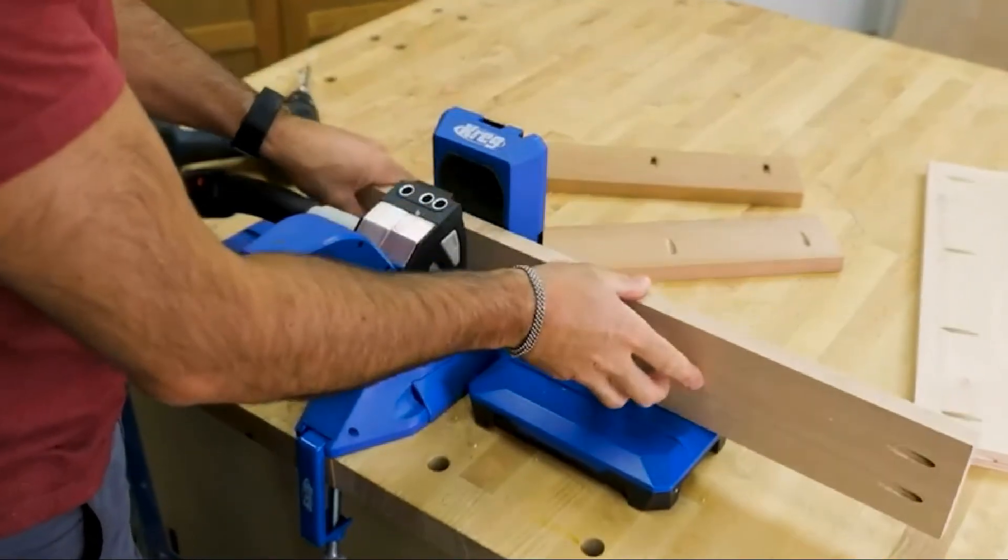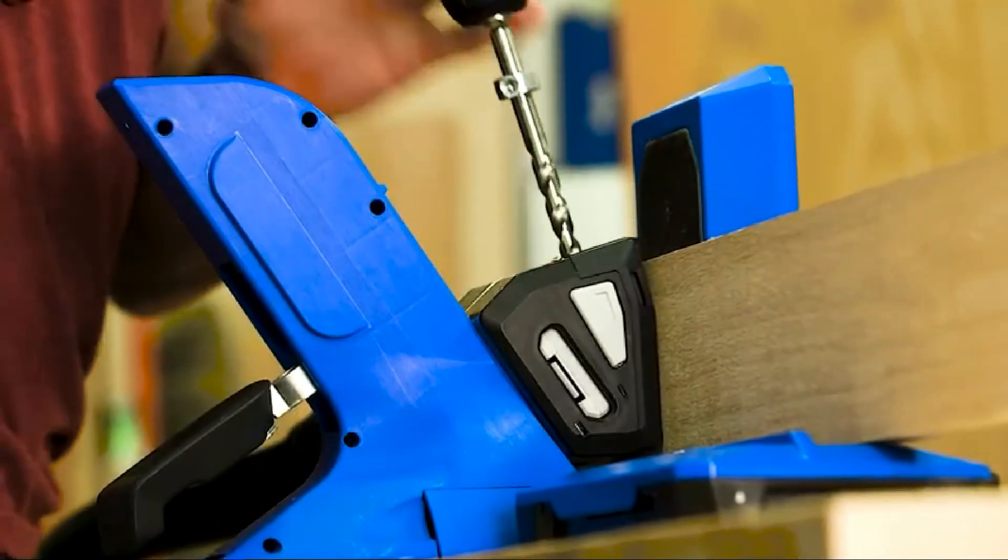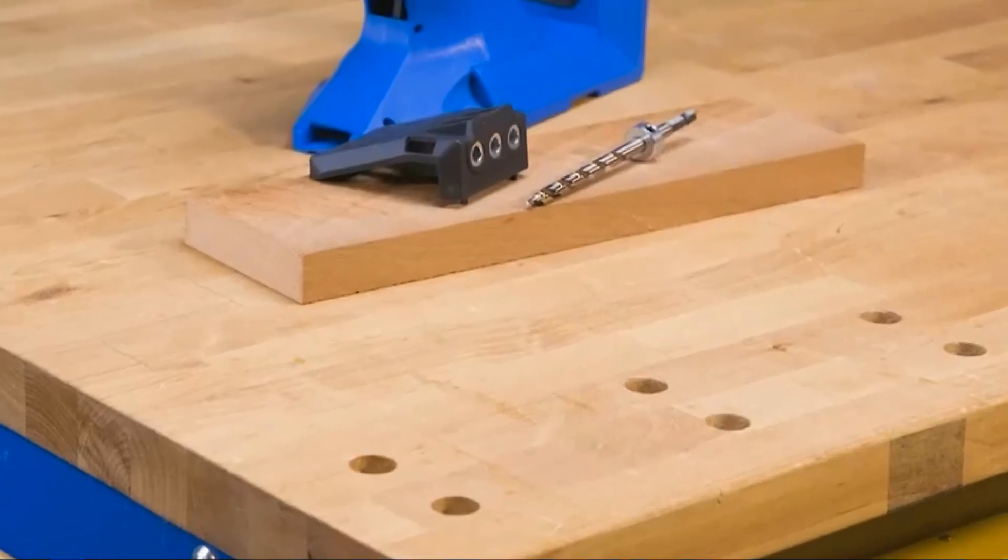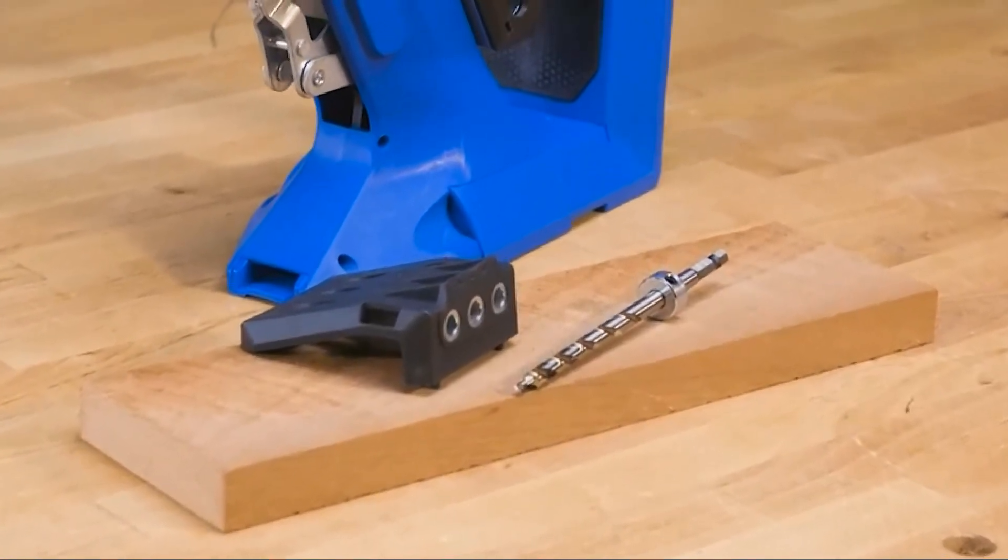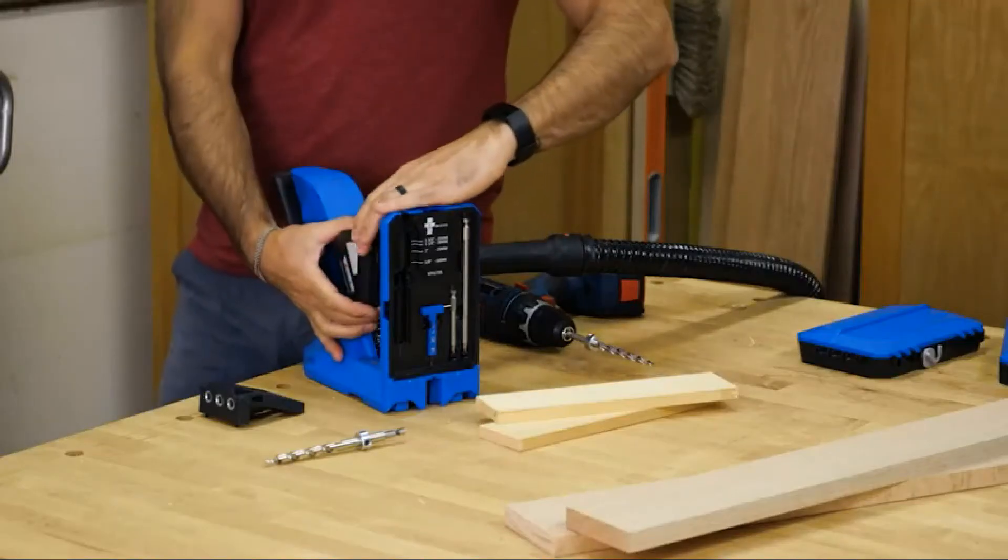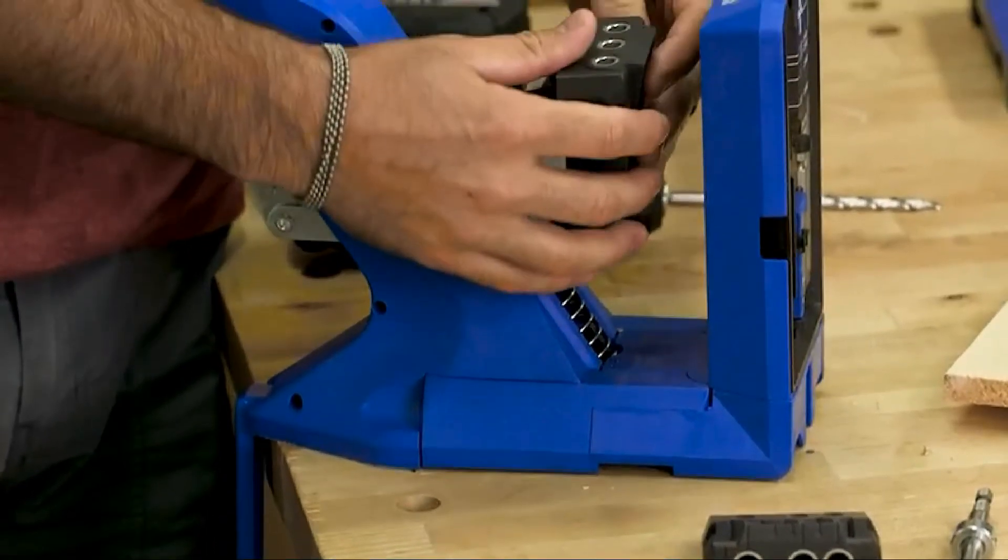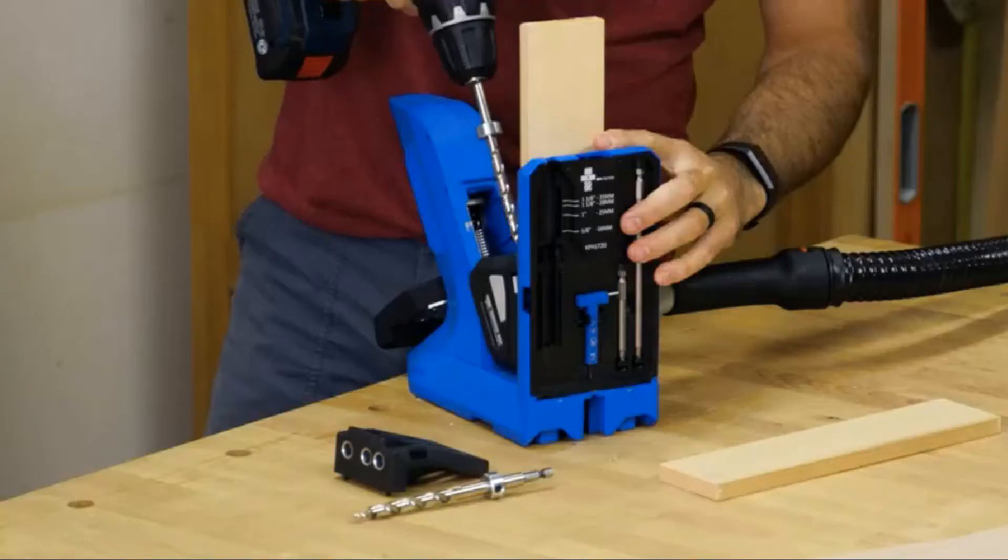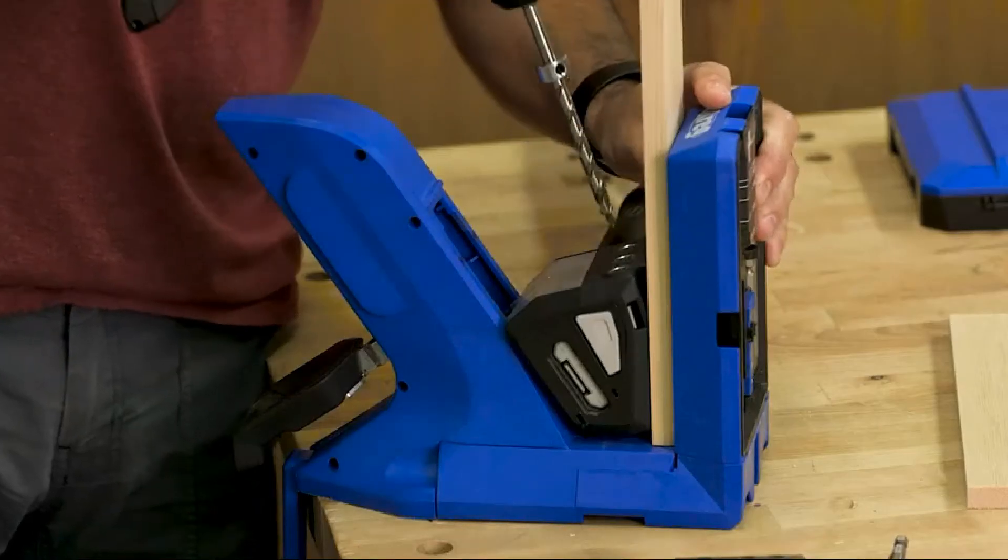While the pocket hole jig 720 Pro is amazingly capable on its own, there are a couple of accessories that can make it even more capable. There's also a micro pocket drill guide for the 720 Pro. It swaps into place when you want to drill smaller pocket holes that are perfect for thinner materials like half inch drawer sides, for narrow workpieces, to make drilling easier in super hard woods, or when you want the smallest, easiest to hide pocket hole possible.